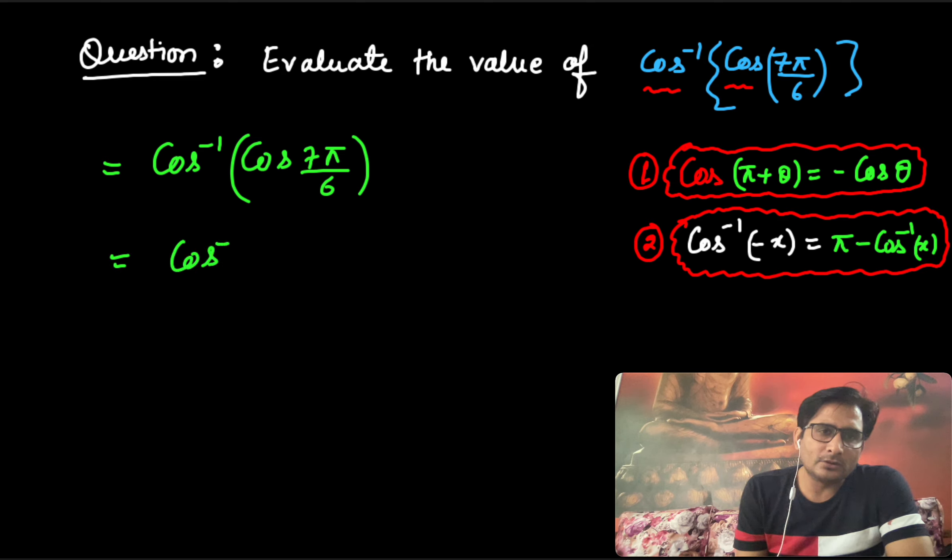Then it is cos inverse cos. This 7π by 6 can be written as π plus π by 6, right?